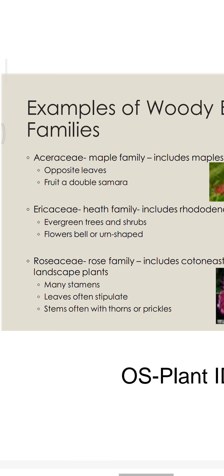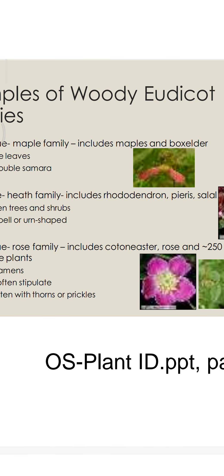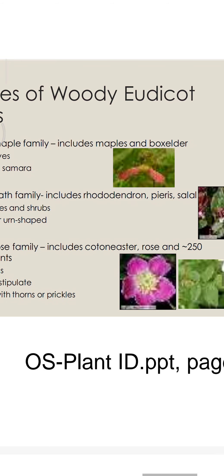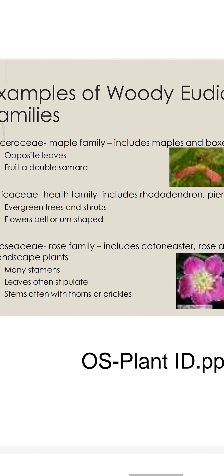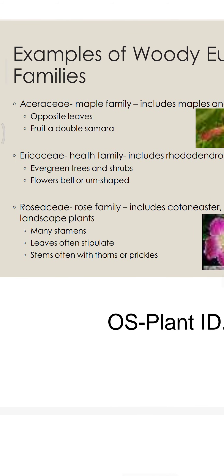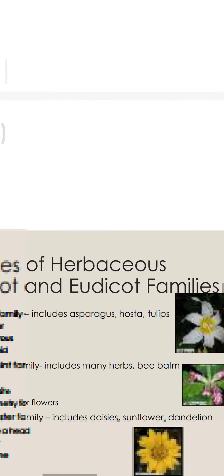Rosaceae, the rose family, includes cotoneaster, rose, and almost 250 landscape plants. They have many stamens, leaves often with stipules, and stems often with thorns and spikes.